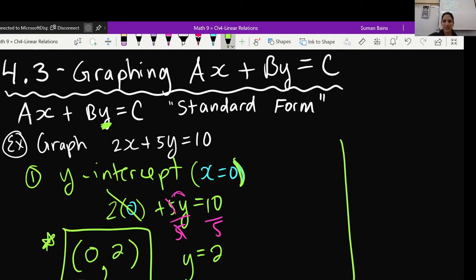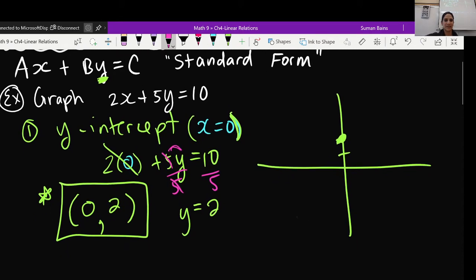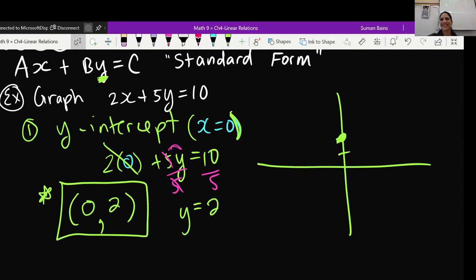So I'm going to put this as an ordered pair. What would be the coordinates? 0, 2. And I'm going to put a box around it because we're going to use that. Actually, it's asking us to graph it, so let's start to do that here. 0, 2 would be a point that is right there.